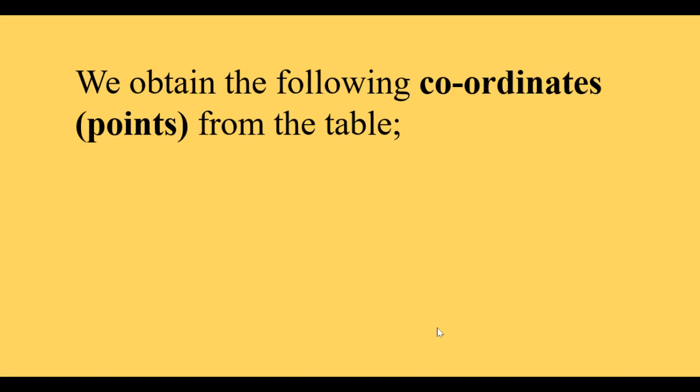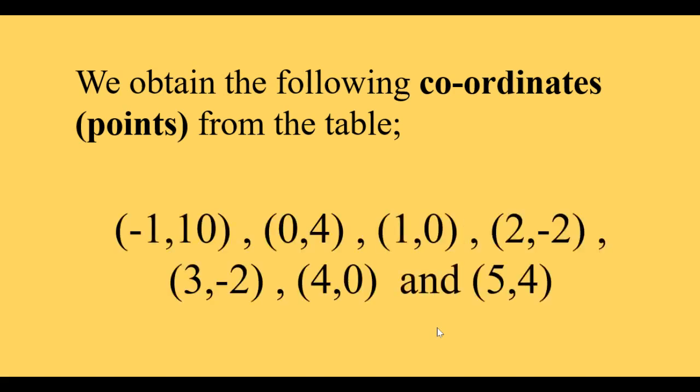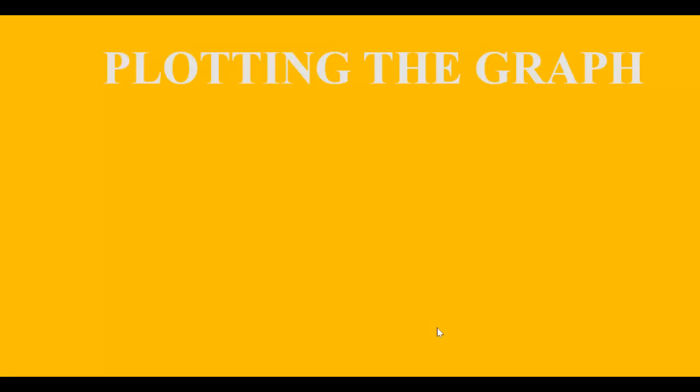The points generated from our table are therefore negative 1, 10; 0, 4; 1, 0; 2, negative 2; 3, negative 2; 4, 0; and 5, 4. So, plotting the graph.